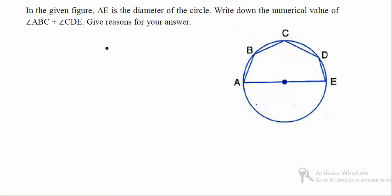Okay, so in the given figure, AE is the diameter of the circle. The question is write down the numerical value of angle ABC plus angle CDE. Give reasons for your answer.